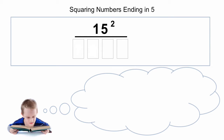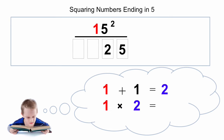Let's look at one more example: 15 squared. Again it ends in 25. The tens digit is 1, so we add 1 to that: 1 plus 1 is 2. We multiply 1 by 2, so 1 times 2 is 2, and there's our answer: 225. Squaring numbers ending in 5 is very simple — you should be able to square any two-digit number ending in 5 in your head.